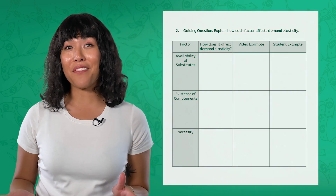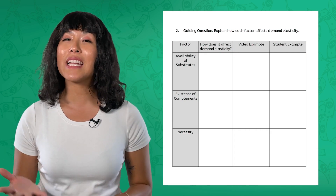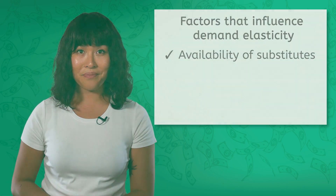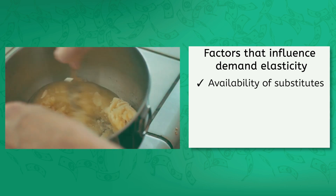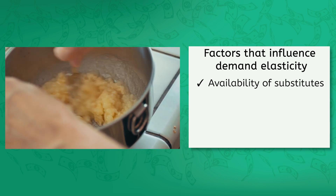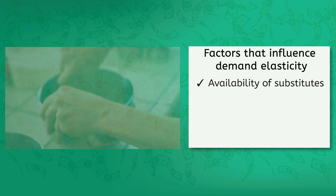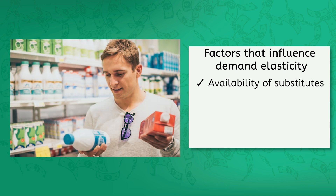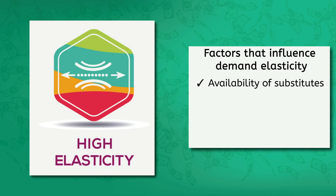What causes goods or services to be elastic or inelastic in demand or supply? Let's start by looking at demand. If you open up your PDF, you'll find two graphic organizers to help you take notes about the factors that influence elasticity. First off, we have the availability of substitutes. Maybe you've used substitutes in cooking or baking before — if you are out of eggs, you can use a banana instead. It's not exactly the same, but it works well enough. If a good or service has substitutes, consumers have other options if the price goes up. Goods and services with lots of substitutes generally have elastic demand — if the price goes up, they will simply buy a substitute instead.